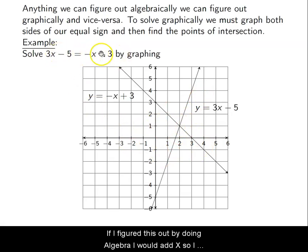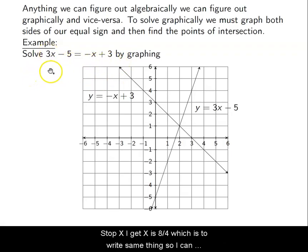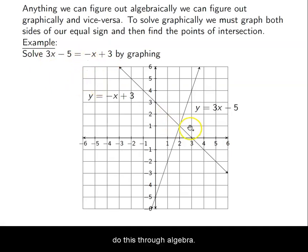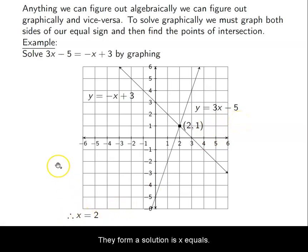If I figured this out by doing algebra: I add x, so I'd have 4x - 5 = 3. I add 5, so I'd have 4x = 8. Solving for x, I get x = 8/4, which is 2 — the same answer. So I can do this through algebra or through graphing. Either way, my solution is x = 2.